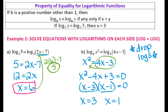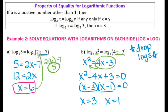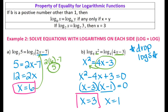Always double-check by plugging back into the logarithm argument to confirm it's positive. If I take 3 and square it, that's positive 9 — good. If I take 1 and square it, that's positive 1 — good. Checking the other side: 4 times 1 minus 3 is 1, and 4 times 3 minus 3 is 9. All arguments are positive, so both x equals 3 and x equals 1 are valid solutions.